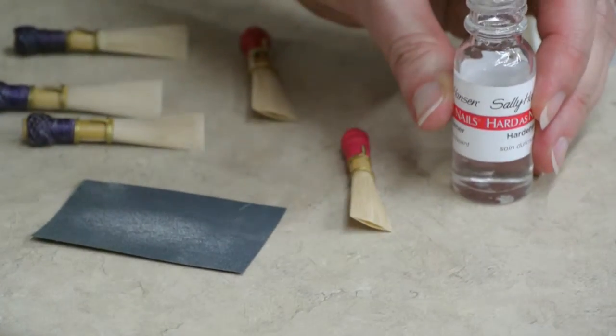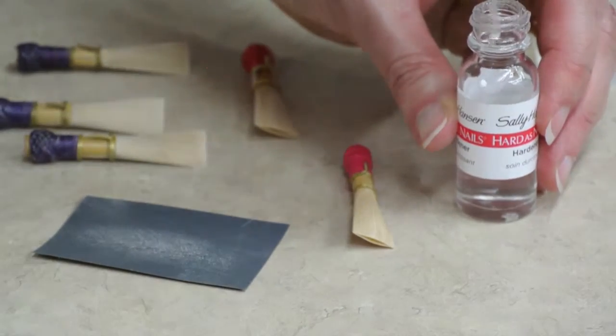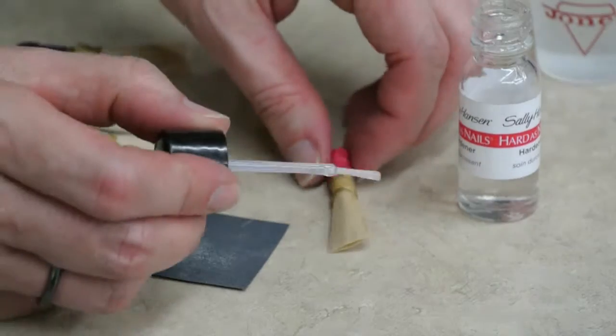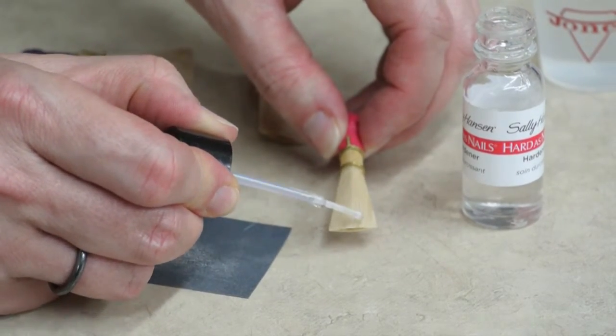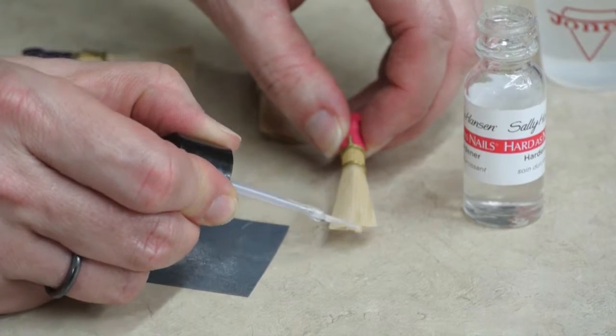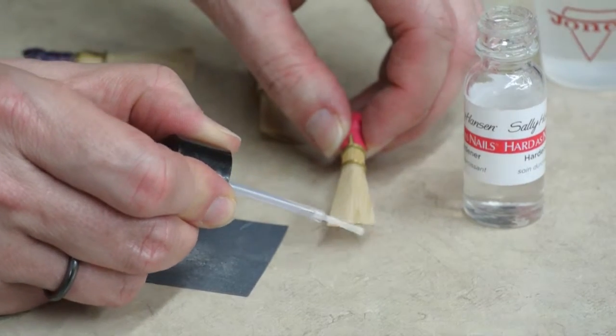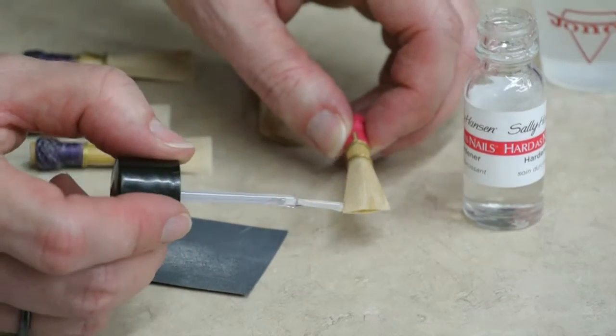Take a very small amount on the end of the brush and paint a very fine line following the split itself, going a little bit beyond what you can tell is an actual split to help shore up the area behind the split.